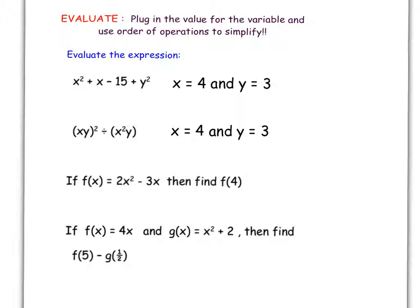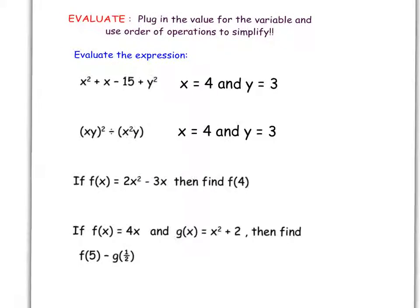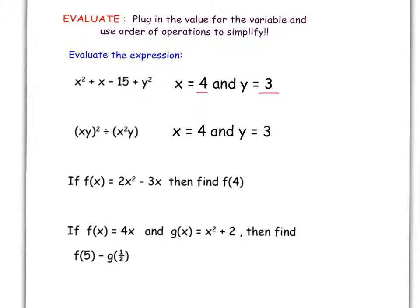And lastly, we want to do more evaluation like yesterday. So it's really important that you remember that you are taking what the variable equals and plugging it in. So for this first one, I'm going to put my parentheses like we talked about, so I don't miss a negative. And any time there is an x, I'm going to put a 4, and any time there is a y, I'm going to put a 3. And then we're going to start simplifying by doing the exponent first. So this is 16 plus 4 minus 15 plus 3 squared is 9. And because these are all the same step addition subtraction, I can go from left to right. This is 20 minus 15 is 5, plus 9 is 14.